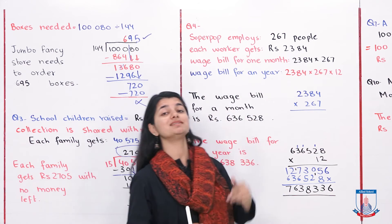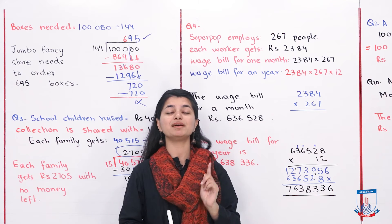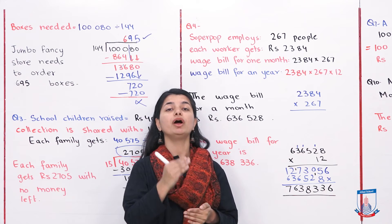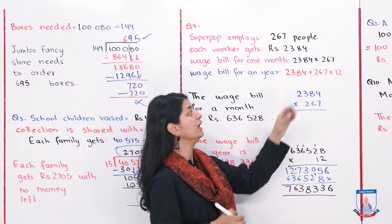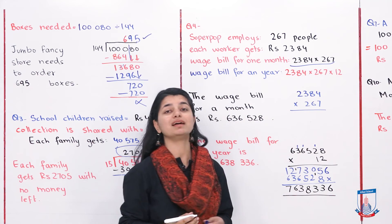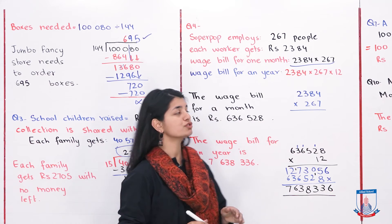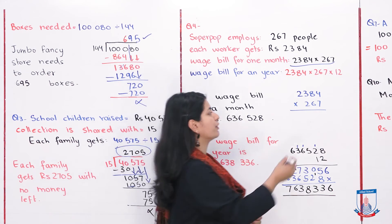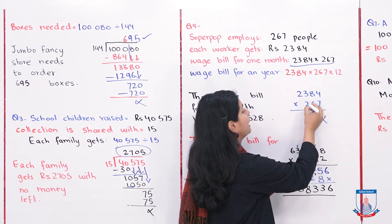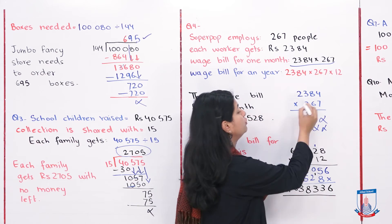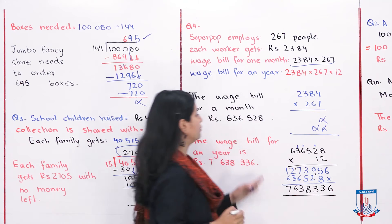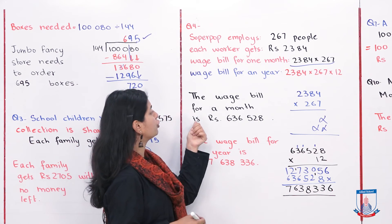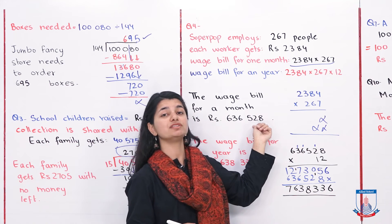For the second part, they ask how much is paid in one year. If you have the monthly total, and there are 12 months in a year, you multiply the monthly total by 12. First solve 2,384 multiplied by 267: multiply by 7, then put a zero placeholder and multiply by 6, then two zeros and multiply by 2. Adding all partial products gives 636,528. The wage bill for one month is Rs 636,528.